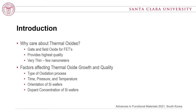Why care about thermal oxides? Most predominantly, we use them in gate and field oxides for field effect transistors. It's the heart of the device, where a conducting channel is formed between source and drain. The field oxide provides isolation from other devices. Thermal oxide provides the highest quality because of the lowest interface trap densities. In today's technology, it's a very thin film — around 1.2 nanometers — so it is important to understand how to grow thermal oxides.